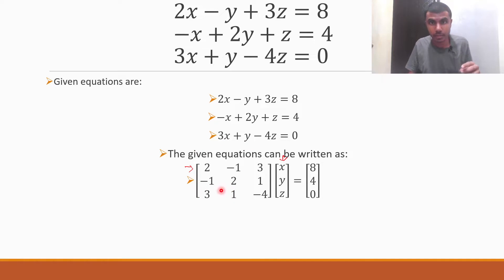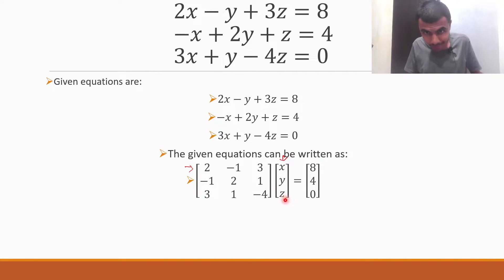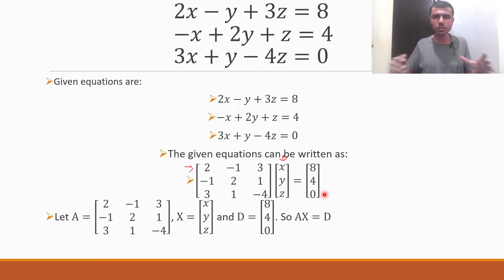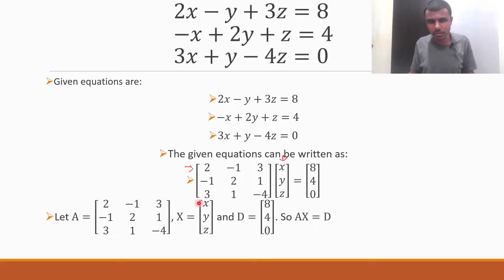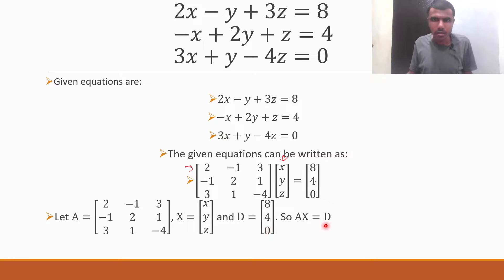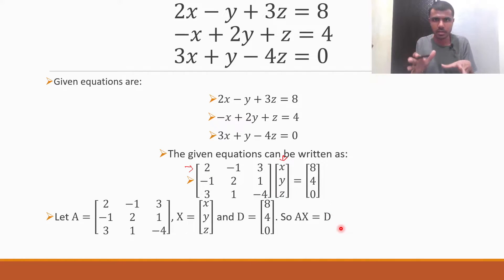The first matrix I am going to take as capital A, the second matrix is capital X, and the third matrix is capital D. Let A equal to this, X equal to this, and D equal to this. So A into X equal to D — this is my matrix equation.